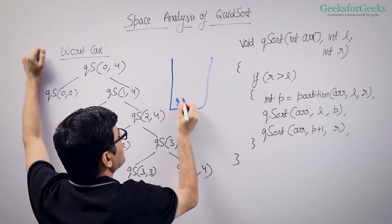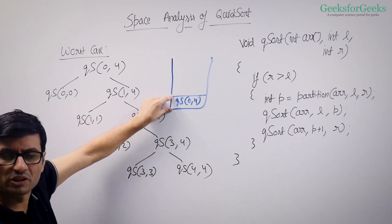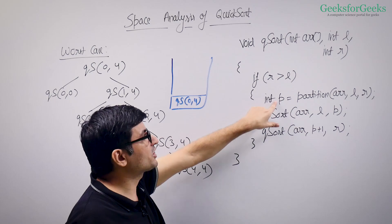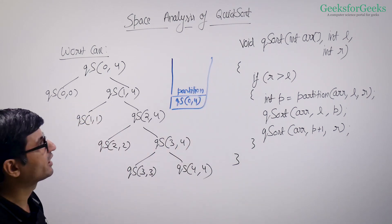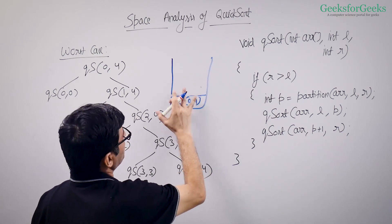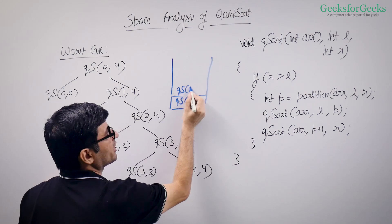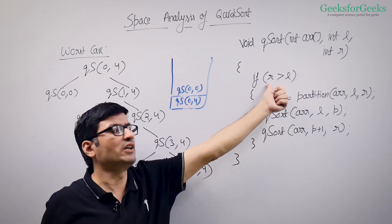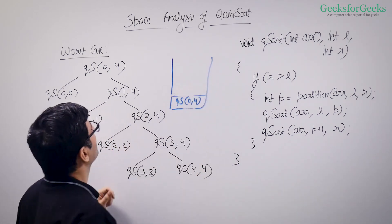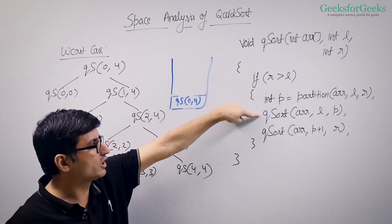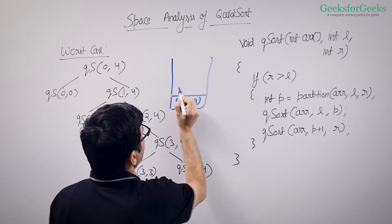When you make the first call qsort(0,4), it goes into the recursion call stack. Then you call the partition function — partition goes into the stack, partitions the array, and returns. Then you call quicksort(0,0), which immediately returns because it fails the base condition. Now the left call is done, so you call quicksort(1,4).